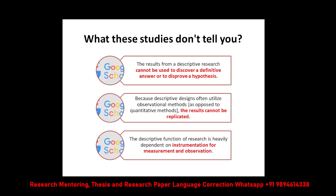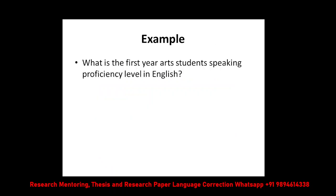Another example: what is the first-year arts students' English speaking proficiency level? This is an example of descriptive research. The researcher will just take the data and describe the proficiency level of the English students — it's a perfect example of descriptive research. Similarly, based on your department or field, descriptive research is one of the easiest methods to conduct research.